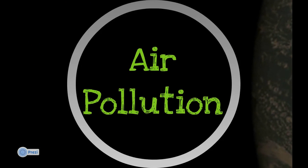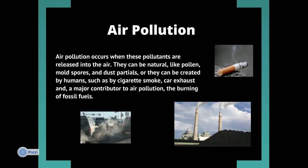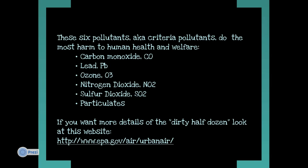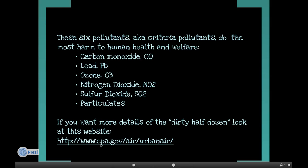Next up is air quality. Air pollution is when pollutants are released into the air. They can be natural, like pollen, dust, or mold, or they can be created by humans, such as cigarette smoke, cars, and the major contributor to air pollution — the burning of fossil fuels. These are the six pollutants that do the most harm to human health, also called criteria pollutants or the dirty half dozen. You can also look at this website to read even more about them.